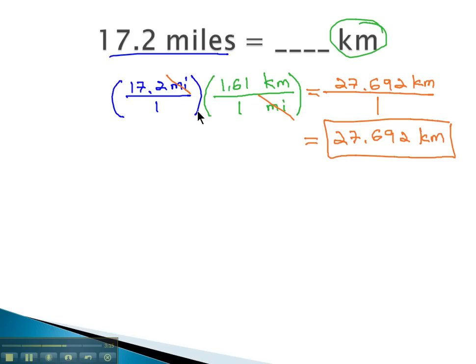Again, notice we set this up by first making the 17.2 miles into a fraction, putting the miles in the opposite location, changing to kilometers, and then we looked up on some conversion chart the relationship to set up the rest of our conversion factor.